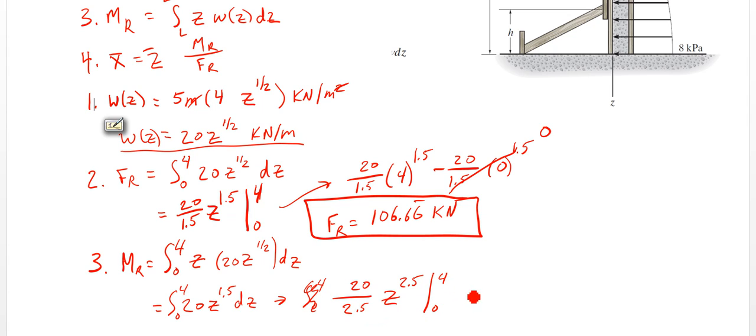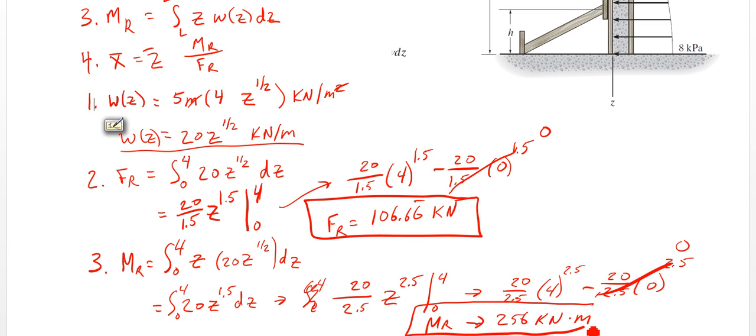We're going from 0 to 4 again. So that becomes 20 over 2.5 times 4 to the 2.5 minus 20 over 2.5, 0 to the 2.5. So again, that becomes 0, and that bottom part here becomes 256 kilonewton meters. So that's MR. And which direction is that going? It's going to be going clockwise. So we're going to the right here. So I'll just put a clockwise sign there.